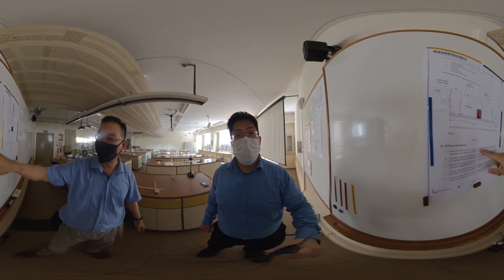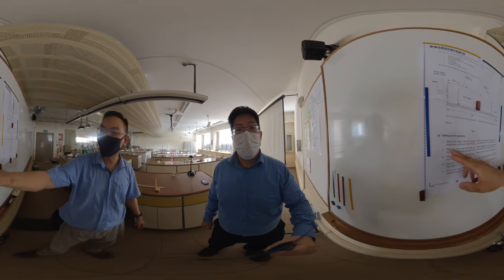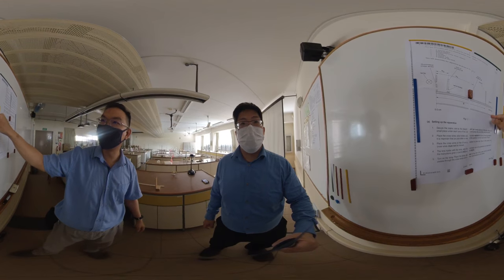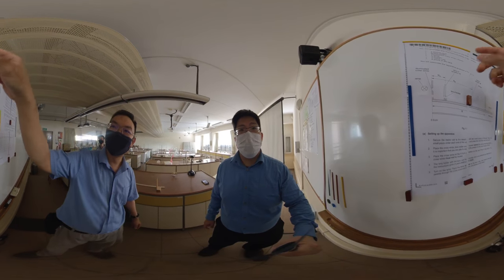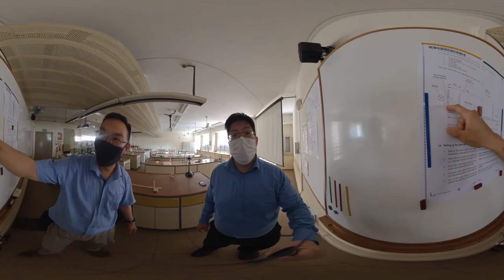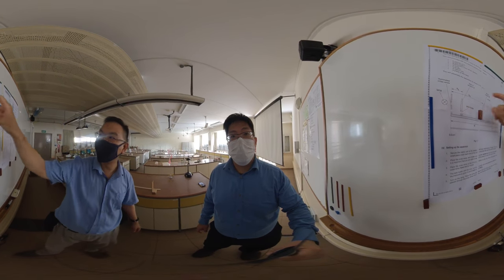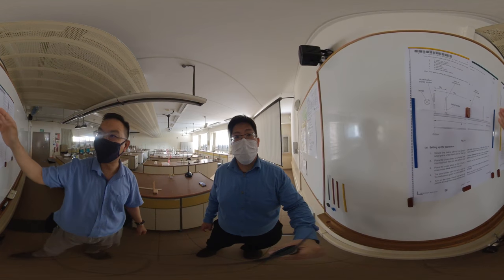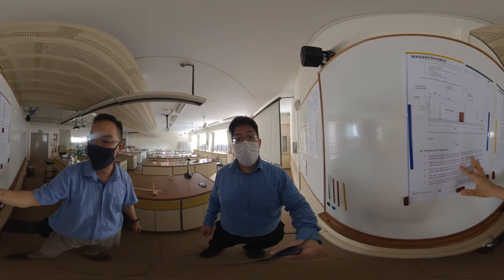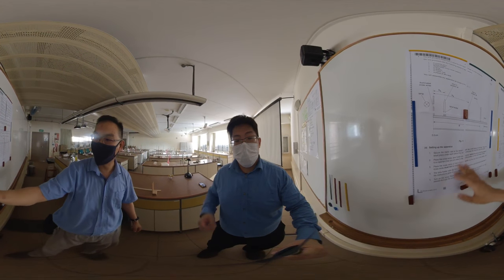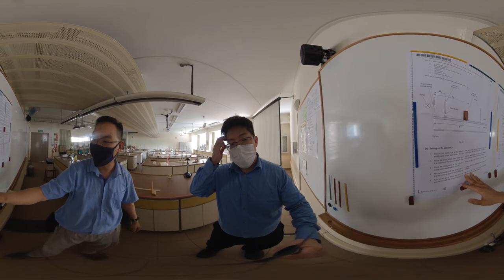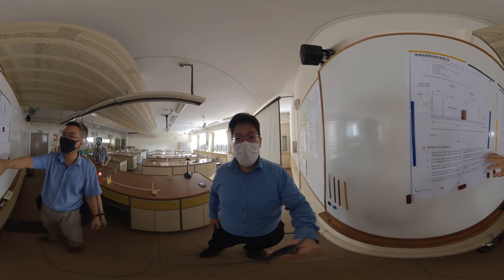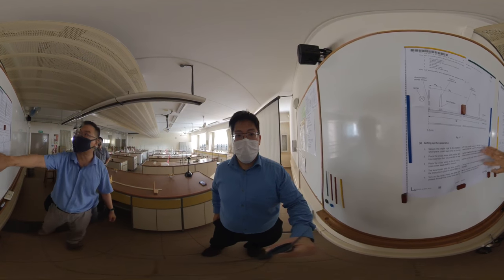The basic instructions: your ruler shouldn't move and your object shouldn't move, your screen shouldn't move after you set the positions. You follow instructions. The degree of accuracy you need to follow, please read carefully.